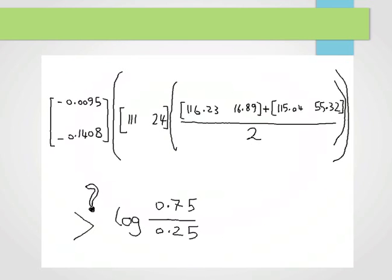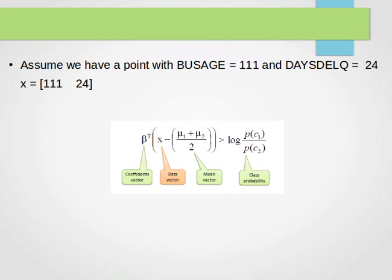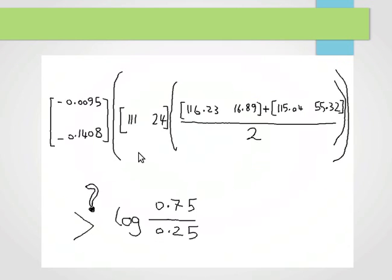Now I know my handwriting is disastrous, but I've just plugged the values in here for you so you can see them. This is the transpose of the coefficient vector, the beta vector. This is our input vector, 111 and 24. This is the first mean vector, this is the second mean vector. Here we check whether that value is larger than log of probability of the first class over the probability of the second class. I leave it to you to use your calculator to check whether the new point belongs to the no class or to the yes class.